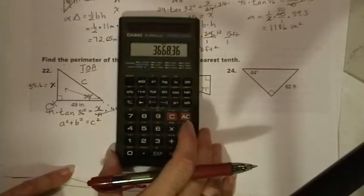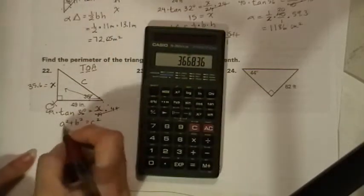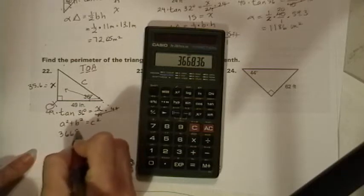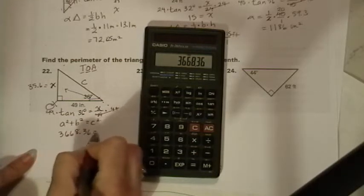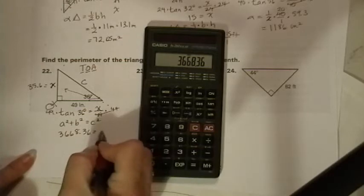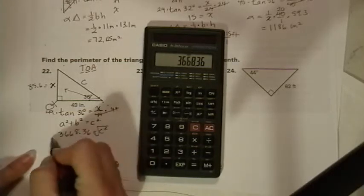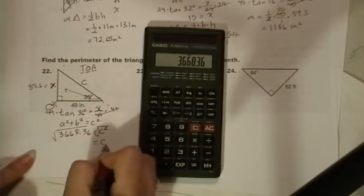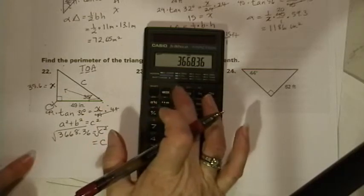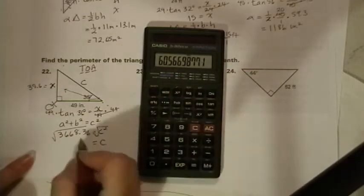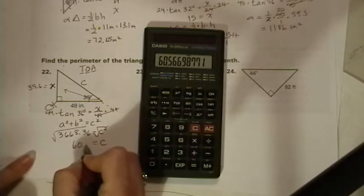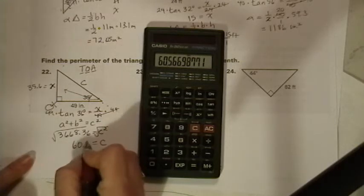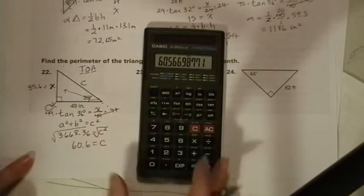That is what A squared plus B squared is equal to. Now, it is wise to not clear your calculator because you can take the square root from here. You're going to have to take it anyway. So, square root. That's shifted square and you get 60.566. We're just going to round it to 60.6.